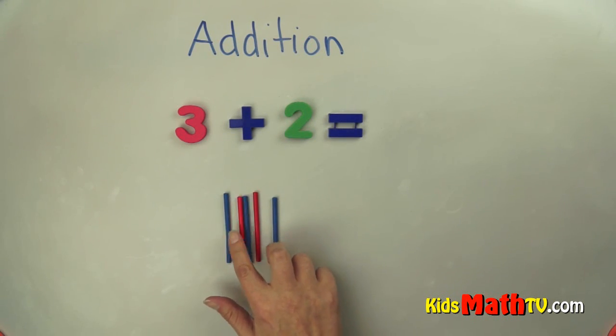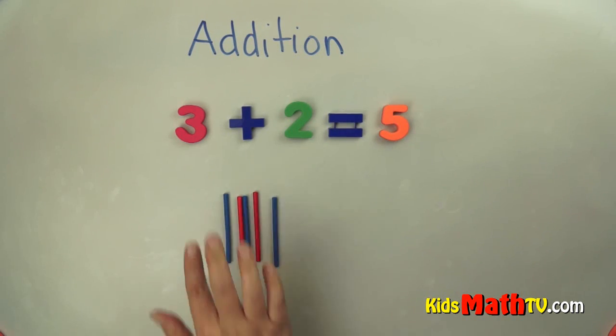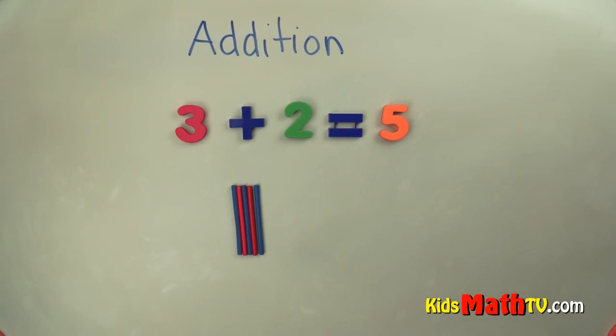One, two, three, four, five. Five all together. So when we add, we combine the amounts together to get our total.